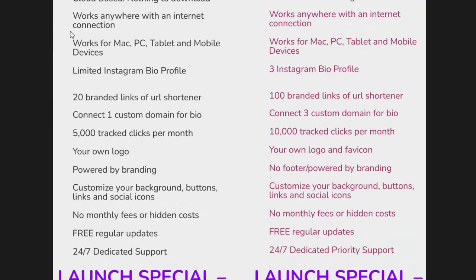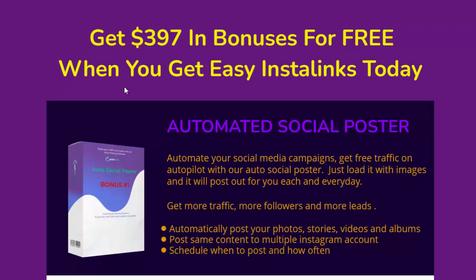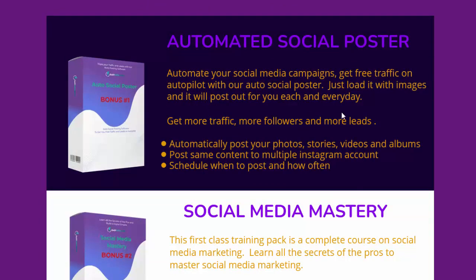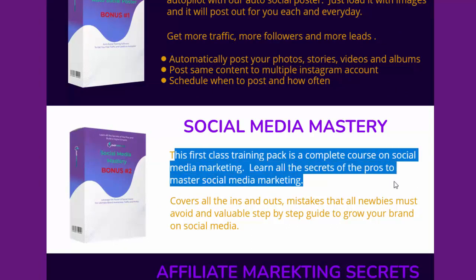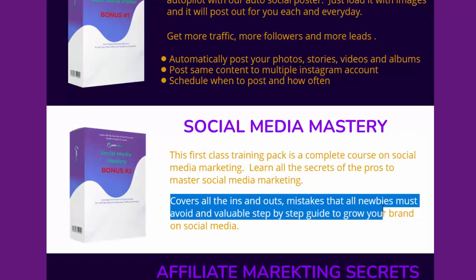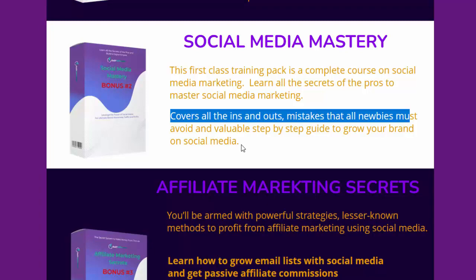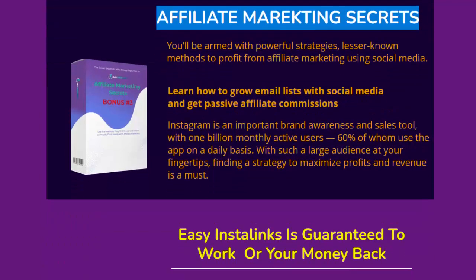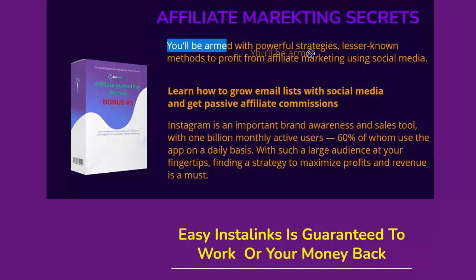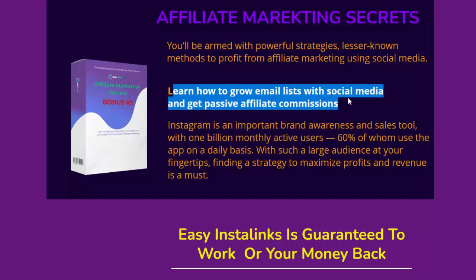Get $397 in bonuses for free. The first bonus is an Automated Social Poster — automate your social media campaigns, get free traffic on autopilot by loading it with images, schedule posts of photos, stories, videos, and albums across multiple Instagram accounts. The second bonus is Social Media Mastery, a complete course covering all the secrets of social media marketing, including mistakes newbies must avoid. The third bonus is Affiliate Marketing Secrets — powerful strategies and lesser-known methods to profit from affiliate marketing using social media.